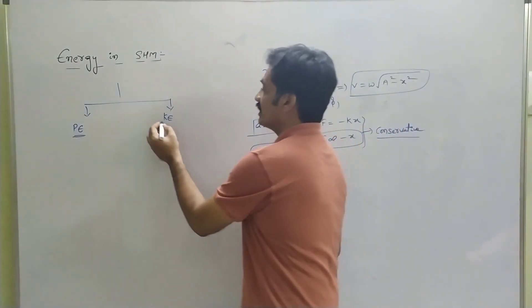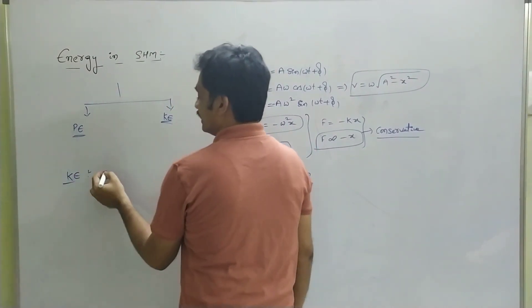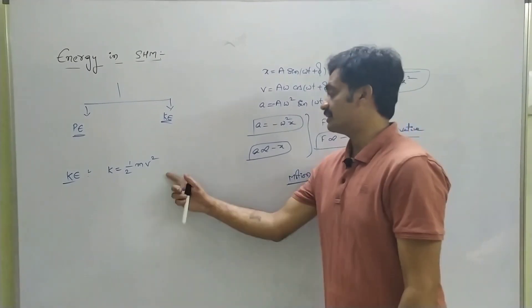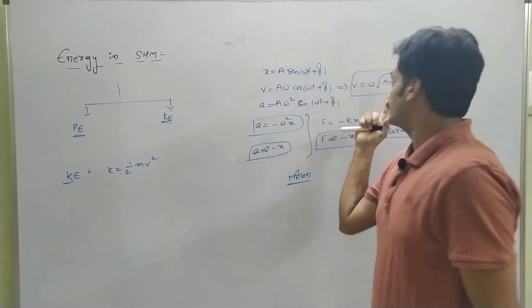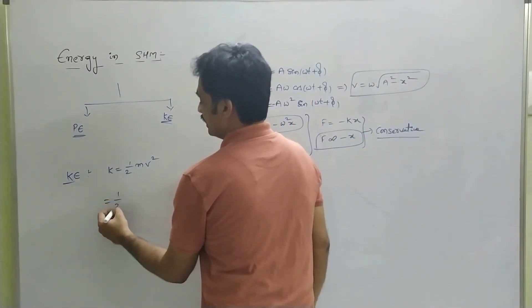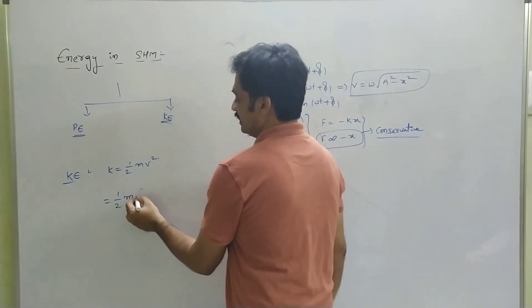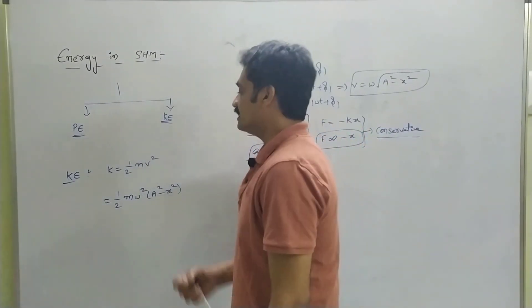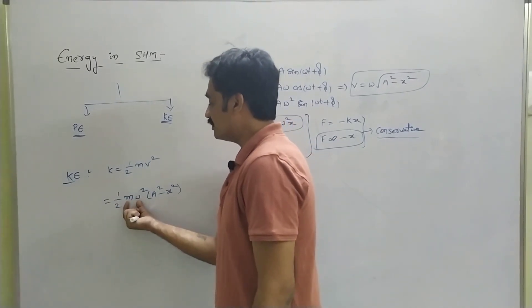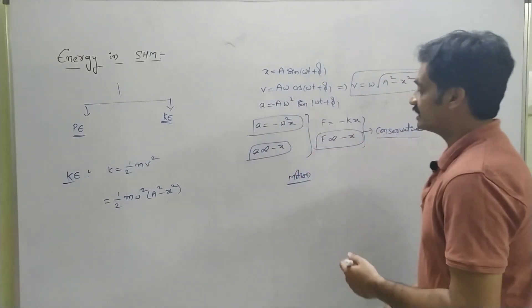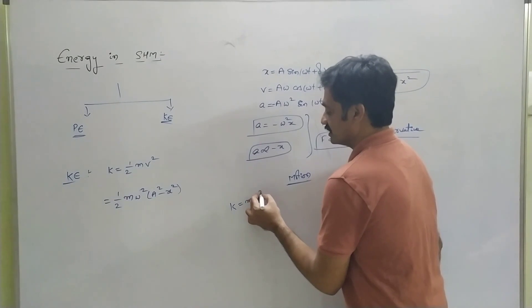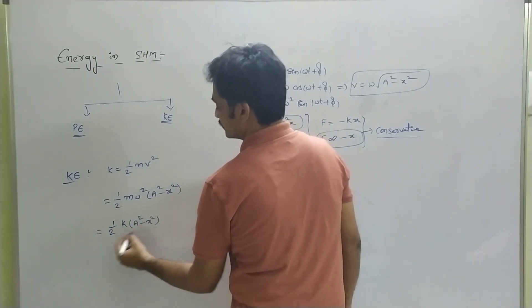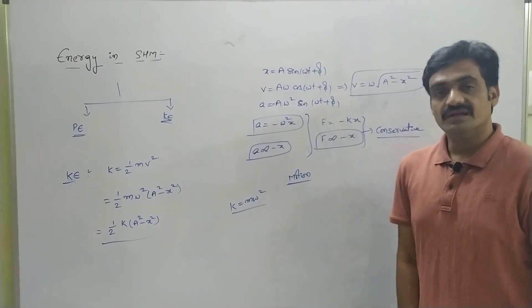We are going to derive the expression for kinetic energy. We know that kinetic energy is given as K equals to half mv², where v equals to ω times the square root of (A² - x²). Substituting this value, we get K equals to half m times ω² times (A² - x²). Here mω² can be represented as k, so kinetic energy becomes half k(A² - x²).